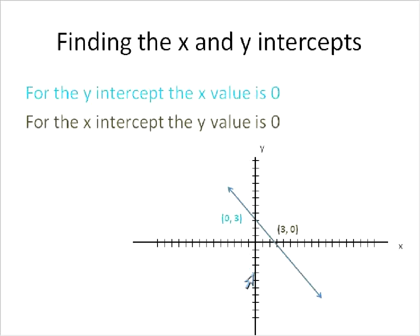For all y intercept values, for every single time it crosses the y intercept, the x value will be 0. If we move along the x axis, then it's not crossing the y. So for all y intercept values, the x is equal to 0. And we see that here. Where it crosses the y axis, the y intercept, the value is 0, 3. So every time it crosses the y axis, the x value will be 0.